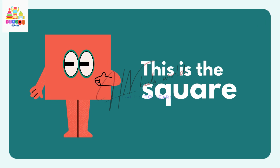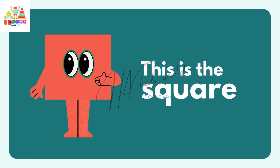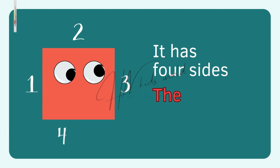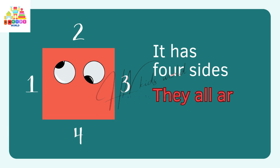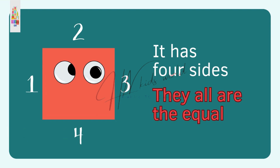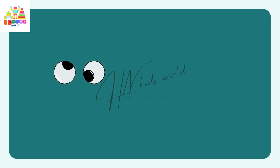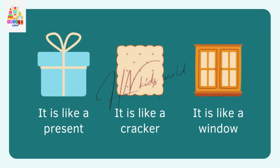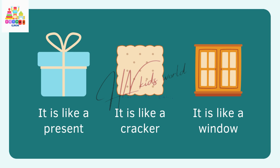This is the square. It has four sides — they all are equal. It is like a present, like a cracker, and like a window.